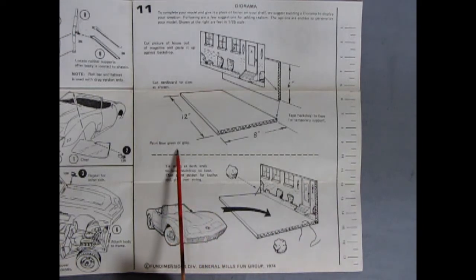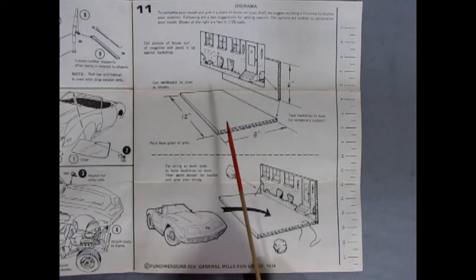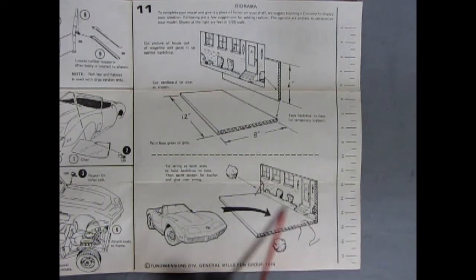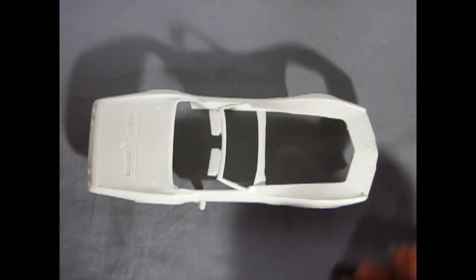And then it says to paint the base green or gray, but you could use flocking now. Or even glue some sandpaper, fine sandpaper upside down, which make it look like asphalt. Then it says to tie string on both ends to hold the backdrop to the base. But of course now you could use a hot glue gun and go right across the back and it would end up looking pretty nice. Wouldn't need these little strings on there. And then paint cotton for bushes and glue over the strings to hide your strings. Then you put your model on the top and you got this groovy little diorama.